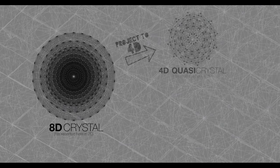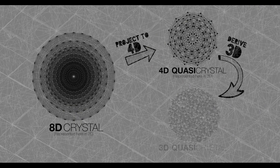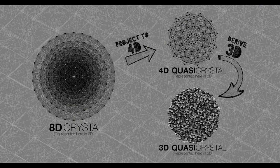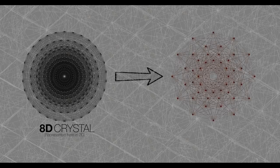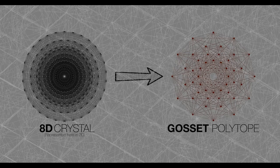To generate that 3D quasicrystal — the substructure of the pixelated fabric of reality — we project this 8D crystal to 4D, and then convert that to 3D. Just like the basic cell shape of the 3D cubic lattice is the cube, the cell shape of the E8 lattice is an 8D shape with 240 vertices. We call it the Gossett polytope.